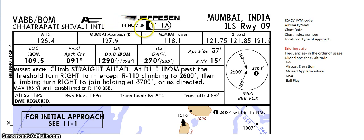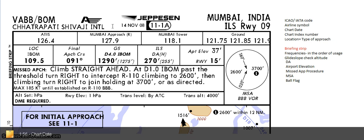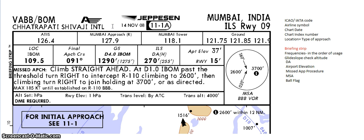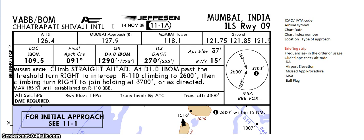Here you can see a date, 14 November 2008 — this is the date on which this chart was published. On most charts you can also see another date just below this written as EFF followed by a date, for example EFF 30 November 2008, meaning that chart would be effective from that date. In this case there is no such date, which means the publishing date and the effective date are the same.